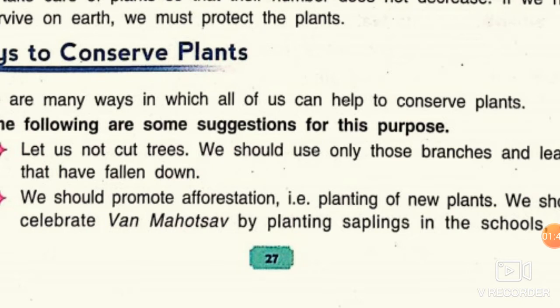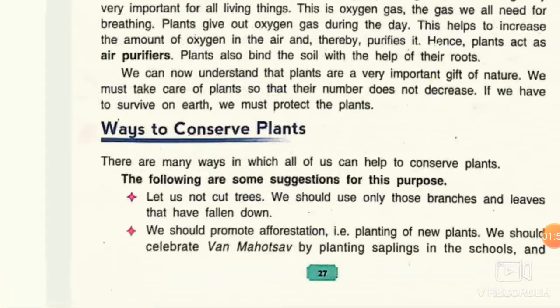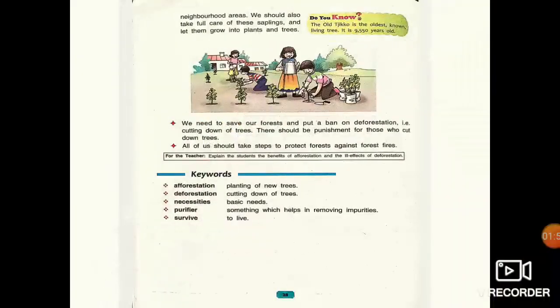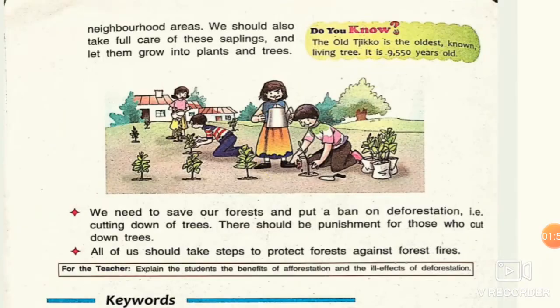We should celebrate Van Mahotsav by planting saplings in schools and our neighborhood areas. Van Mahotsav, as the name suggests, is a festival of plants — a one week celebration of planting saplings in different areas to increase the number of plants on our earth. Plants are very important; they are our life. So we should always increase the number of plants, and that is why we celebrate Van Mahotsav.